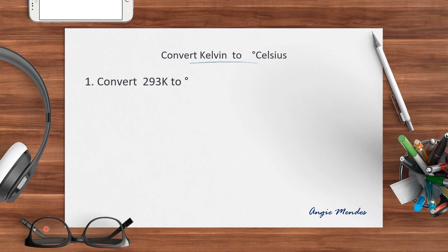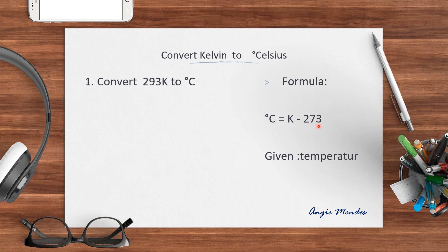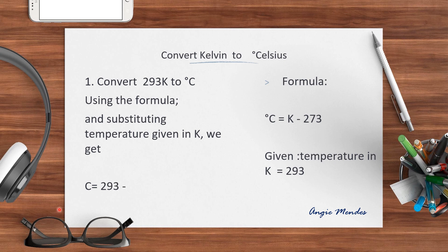Let's take an example where we have to convert 293 Kelvin to degree Celsius. We will use the formula: degree Celsius equals to Kelvin minus 273. What is given is the temperature in Kelvin and the value is 293. Using this formula and substituting the value, we get degree Celsius is equal to 293 minus 273, which gives us 20 degree Celsius.